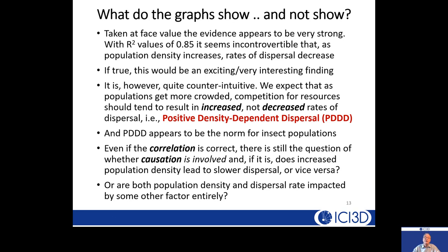What do these graphs show and what do they not show? If you take them at face value, the evidence appears extremely strong — an R squared of 0.85 seems incontrovertible: as population density increases, rates of dispersal decrease. However, this is completely counterintuitive. What we would expect is that as populations get more crowded, competition for resources would cause animals to move more rapidly. We'd expect positive density-dependent dispersal, not negative. And indeed, for other insects, positive density-dependent dispersal appears to be the norm.